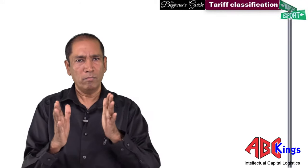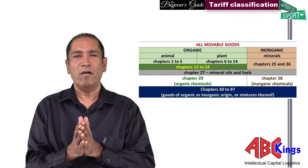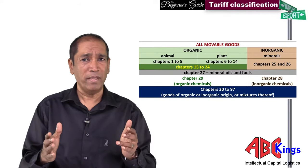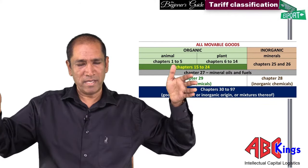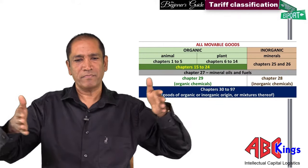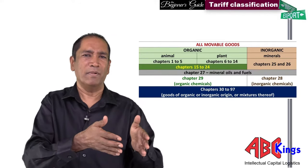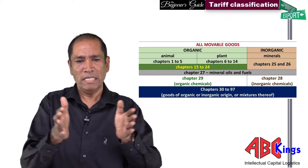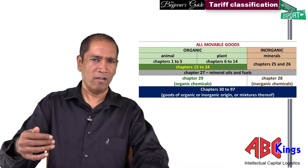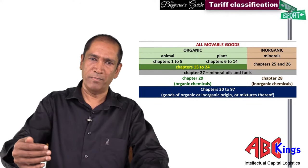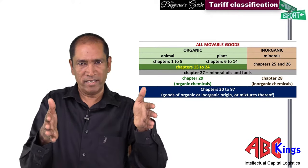All movable goods come from two sources: organic and inorganic. Organic means anything from animal or plant origin; inorganic means anything from under the earth. The nomenclature starts with organic goods. It begins with animals: chapter 1 is live animals, chapter 2 is edible meat and offals, chapter 3 is fish, chapter 4 is dairy products, and chapter 5 is products of animal origin. So the first five chapters cover the animal section.